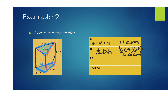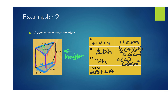For the lateral area, that's perimeter times height. Perimeter was 11, and the height of the prism is 6, so 11 × 6 = 66 centimeters squared. For the total area or surface area: 2 times the base area plus the lateral area. So 2 × 5.6 + 66 = 11.2 + 66 = 77.2 centimeters squared.